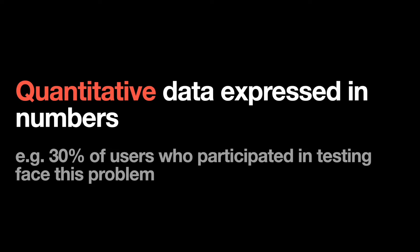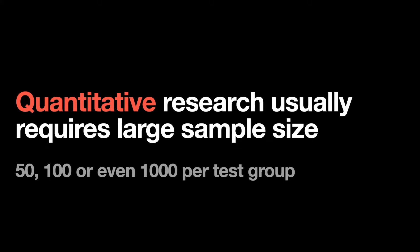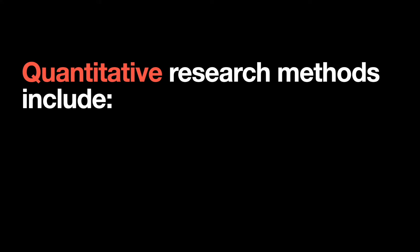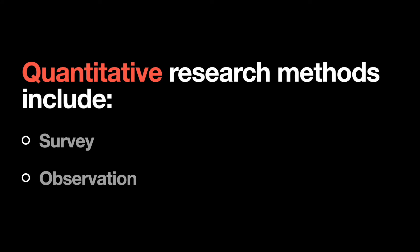The research result might sound like: '30% of our users constantly face this issue.' Quantitative research often requires a large sample size — we might not get reliable results if we don't collect the right amount of data. The term 'statistically significant' is often used in this context. Quantitative research methods include surveys, observation, analytics using tools like Google Analytics, and A/B testing.